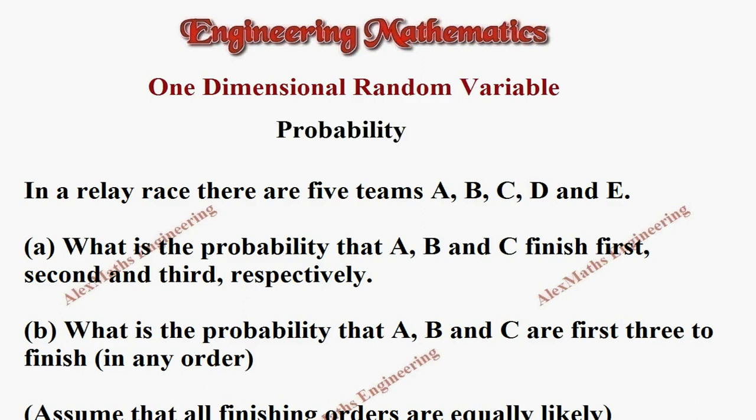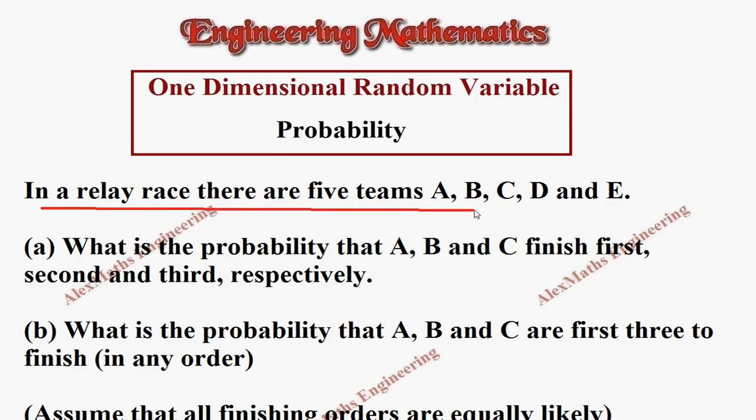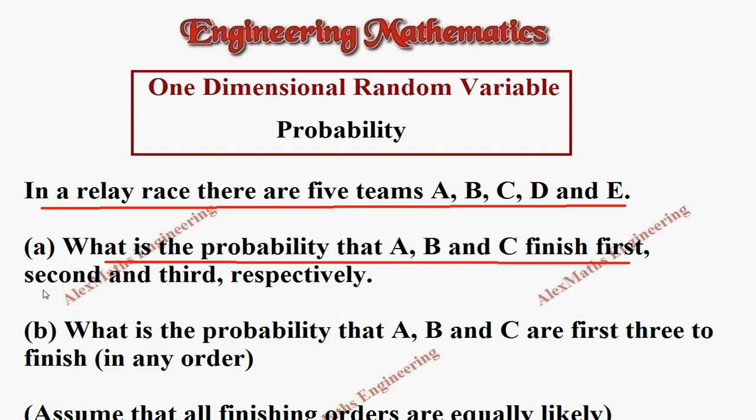Hi students, this is Alex. In this video we're going to solve a one-dimensional random variable problem under probability. The question they have given: In a relay race there are five teams A, B, C, D and E. Part (a) asks: What is the probability that A, B and C finish first, second and third respectively?